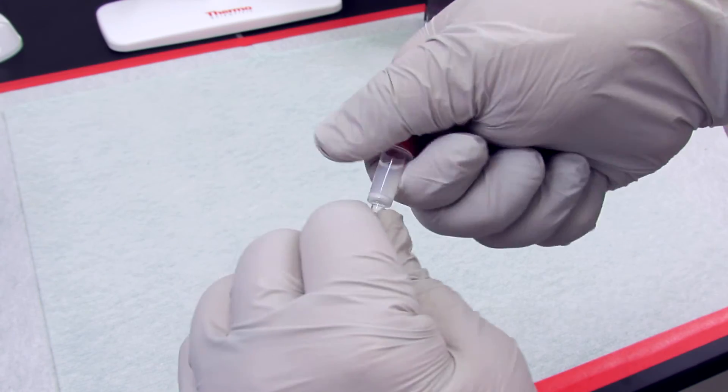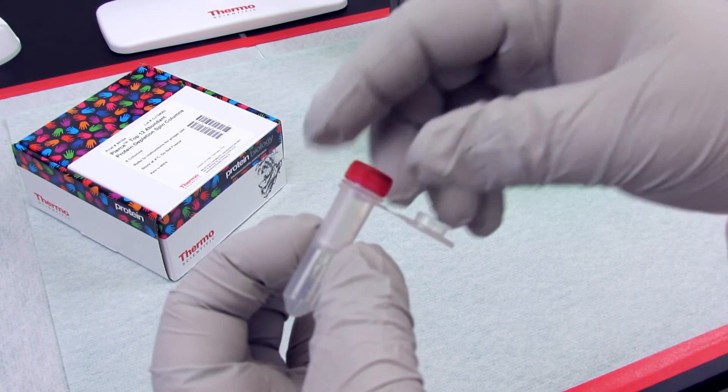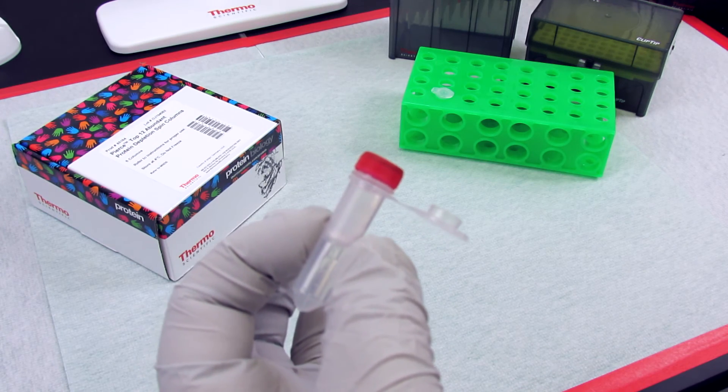Then twist off the bottom closure, loosen the cap, place the column in a 2 milliliter collection tube and centrifuge.